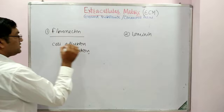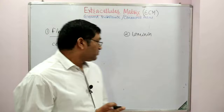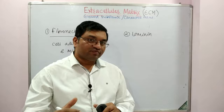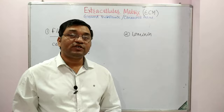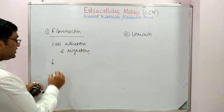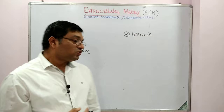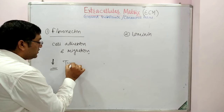Fibronectin is responsible for adhesion and migration. In tumor cells there is a decrease in fibronectin level, which leads to metastasis — metastasis occurs due to loss of cell adhesion due to decrease in fibronectin. So fibronectin is related with tumor cells and metastasis.